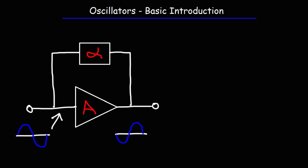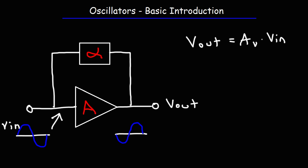An oscillator consists of two main parts: an amplifier and a feedback network. The feedback network in this illustration is indicated by the symbol alpha. The amplifier increases the voltage of the circuit — the output voltage of the amplifier is equal to the voltage gain times the input voltage. The feedback network is an attenuation network; it reduces the voltage going from the output back into the input.